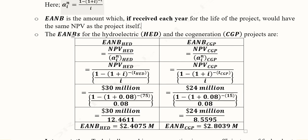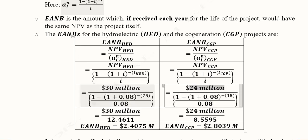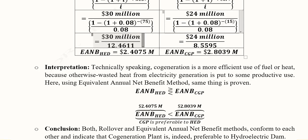We apply the formula for both the hydroelectric dam and the co-generation plant to calculate their respective equivalent annual net benefits. The annuity factor formula is substituted for each project, using the appropriate time span — 75 years for the hydroelectric dam and 15 years for the co-generation plant. The original NPV values are used along with their respective annuity factors to compute the EANB for each project.